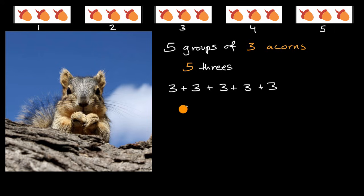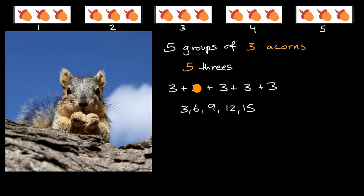So this would be: three, six, nine, 12, 15. Because we add three, we get to six; we add another three, we get to nine; we add another three, we get to 12; we add another three, we get to 15. And so this would be a way of recognizing that you have 15 acorns.